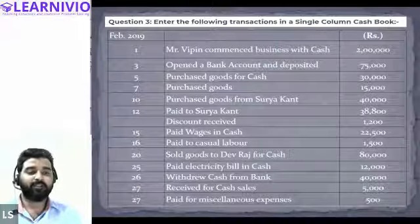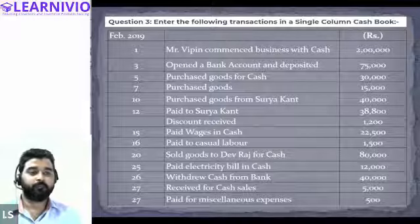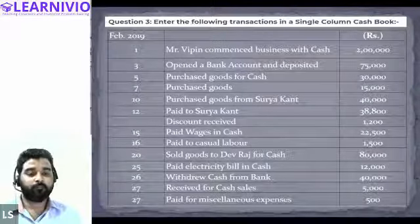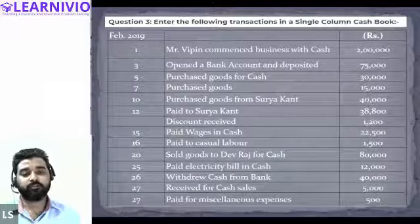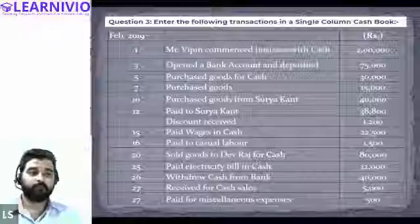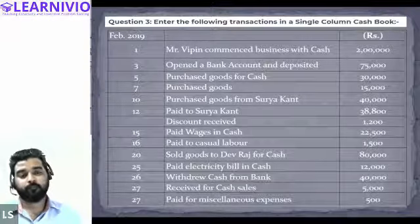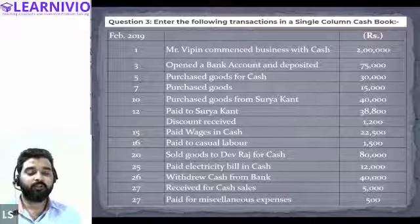Paid to Surya Khan — on which side will this be recorded? 'By Surya Khan' will be written on the credit side of the cash book. Very good. Now, discount received 1,200 — on which side of the cash book will this be recorded? Discount received — we will debit it because we are receiving it.